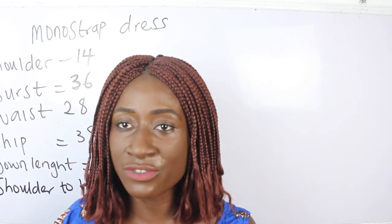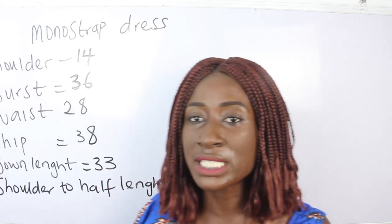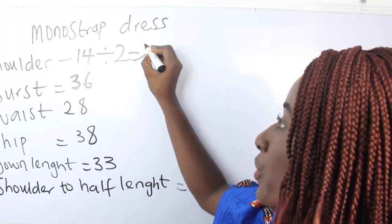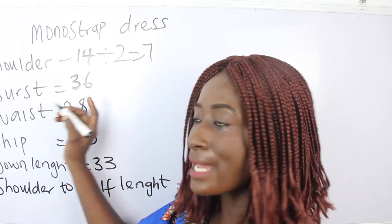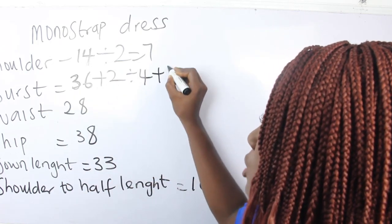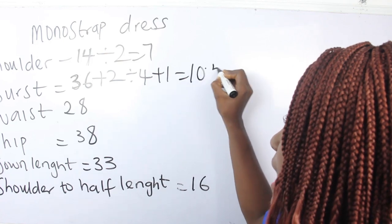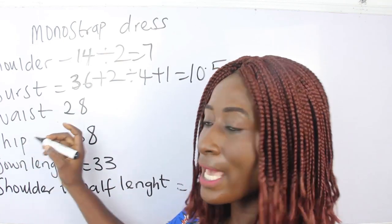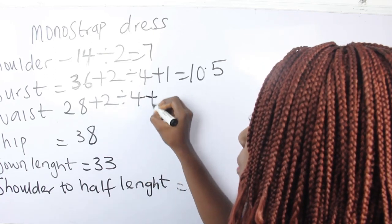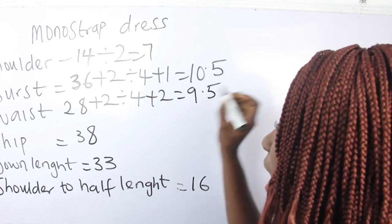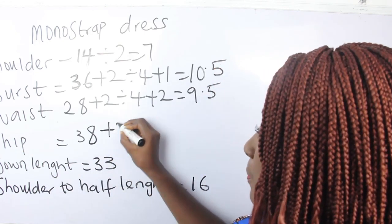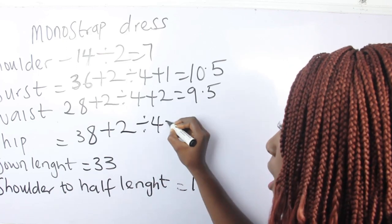Our shoulder measurement is 14 — 14 divided by 2 gives us 7. Our bust is 36 — 36 plus 2, divided by 4, plus 1. Our waist is 28 — 28 plus 2, divided by 4, plus 2 gives us 9.5. Our hip is 38 — 38 plus 2, divided by 4, plus 1 gives us 11 inches.